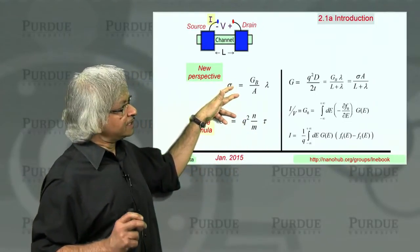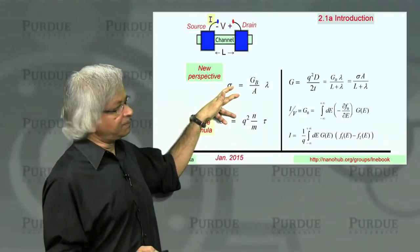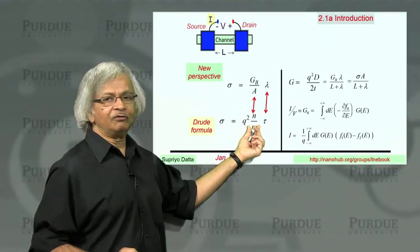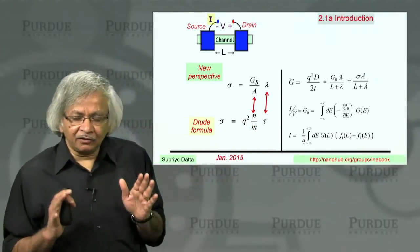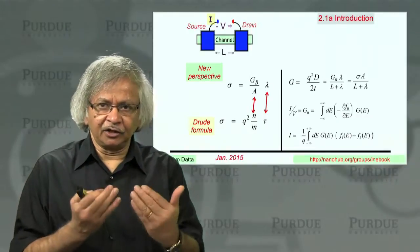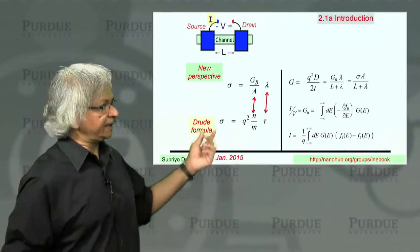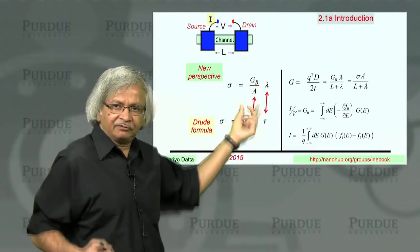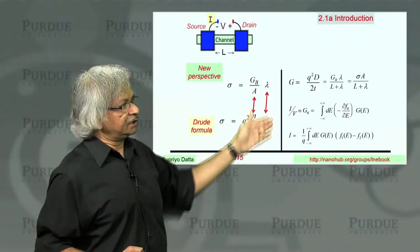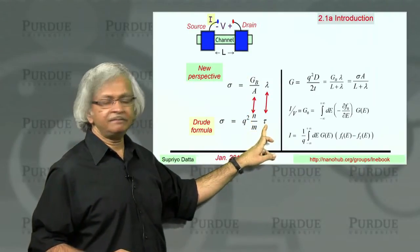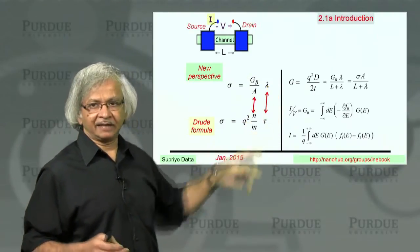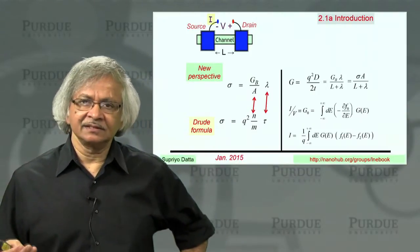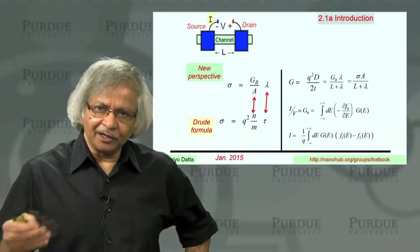If you compare the two, you'll notice this interesting correspondence. There's this n over m, which is like independent of scattering processes - electron density, effective mass, things like that. And correspondingly, we have here this ballistic conductance, which is kind of like that. And then there is another term which depends on scattering. This is the mean free time, and that's the mean free path. And the two are related because mean free path is the average distance an electron travels in a mean free time.